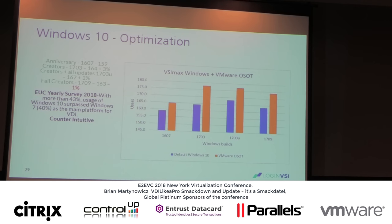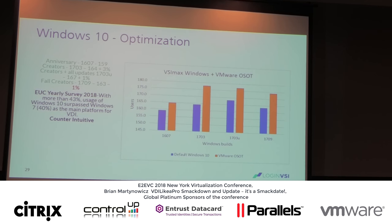Counterintuitively, as new versions of Windows 10 are released, performance is actually increased. You would ordinarily think that going from one version to another — adding more features and functionality — would reduce efficiency. But it's actually counterintuitive. You pick up around 3% density between 1607 and 1709, which is pretty interesting. And the reason this is important is because Windows 10 is now here.